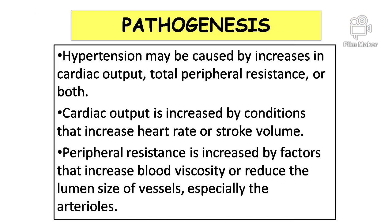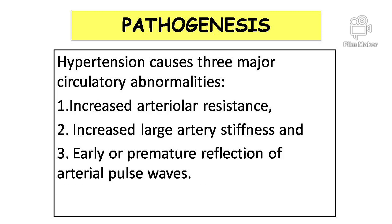Coming to pathogenesis — pathogenesis means the way in which the disease develops. Hypertension may be caused by increases in cardiac output, total peripheral resistance, or both. These slides represent the pathogenesis of hypertension in detail.